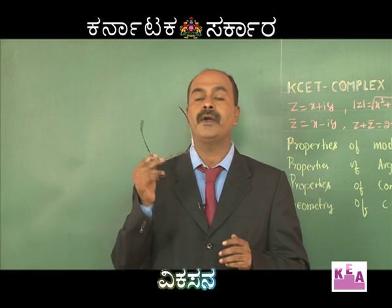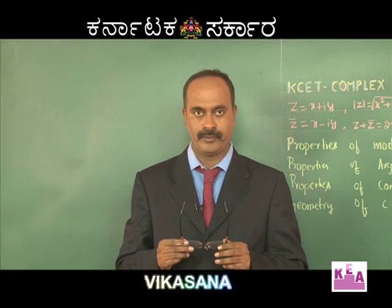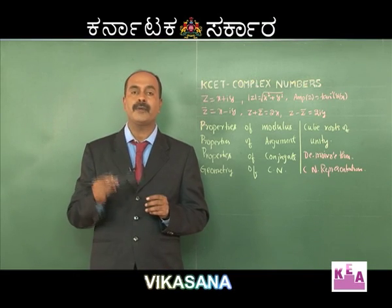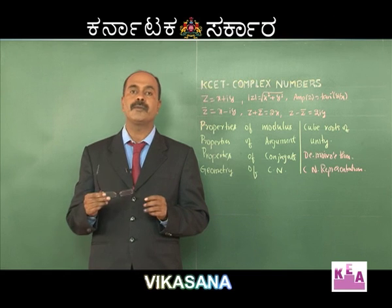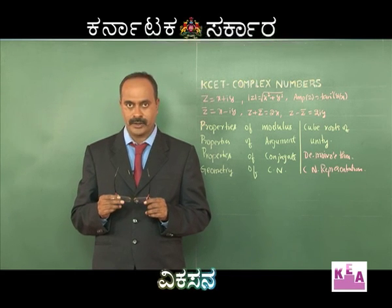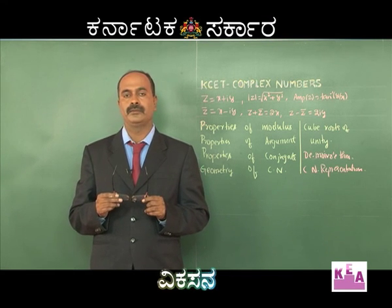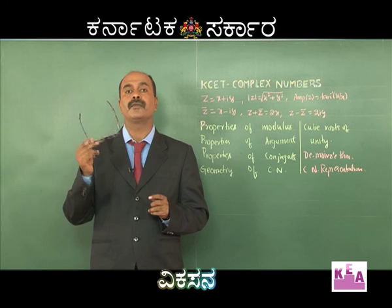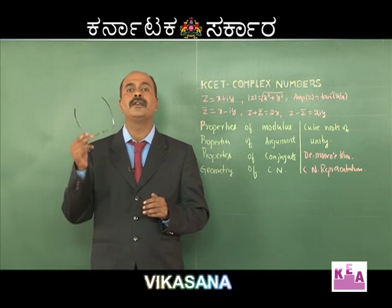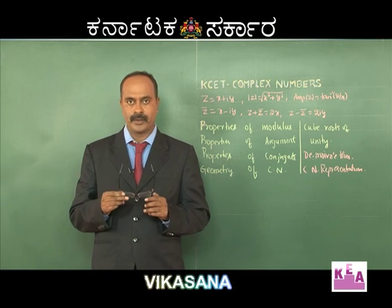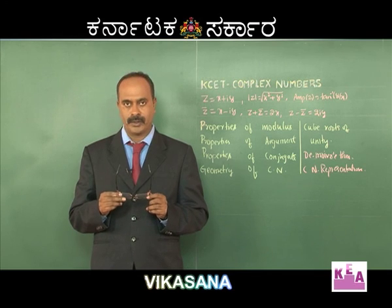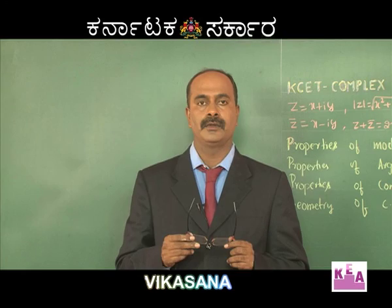Always remember: |z₁ + z₂| ≤ |z₁| + |z₂|. If z₁ and z₂ are collinear, then |z₁ + z₂| = |z₁| + |z₂|.